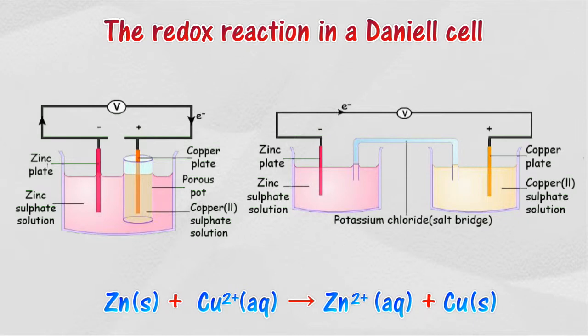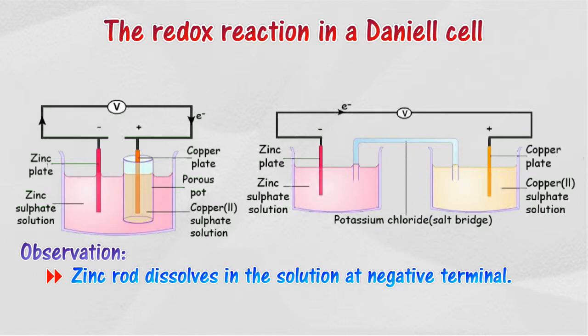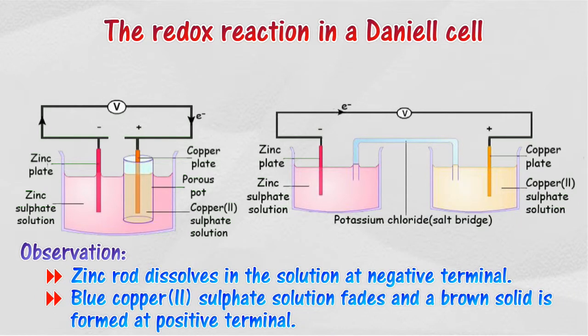This is the overall ionic equation of this reaction. At the negative electrode, the zinc rod dissolves. At the positive electrode, the blue copper sulfate solution fades, and a brown solid forms at the copper rod.